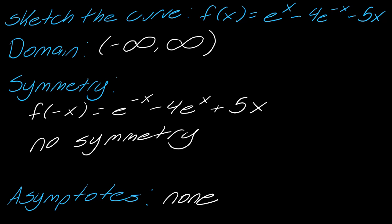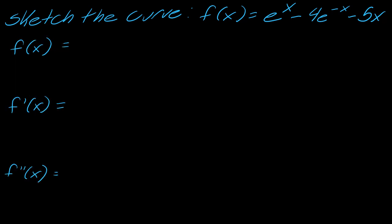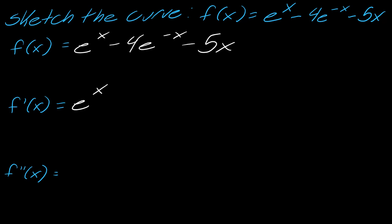Now let's think about derivatives here — I just like to get these out of the way. Starting with my function, let's take the derivative. So that's going to be e to the x plus 4e to the negative x. Remember you're using the chain rule here, so you have to take the derivative of negative x, which is just negative 1, so it's going to flip the sign. And then this will be minus 5.